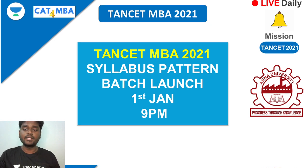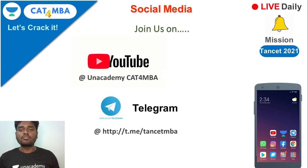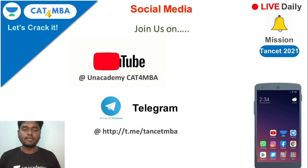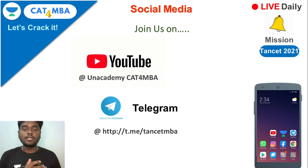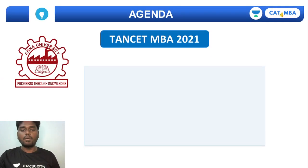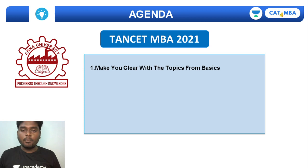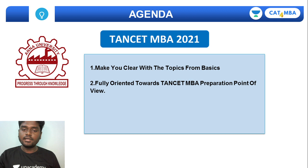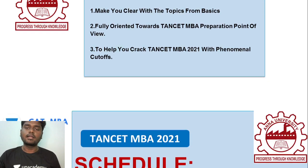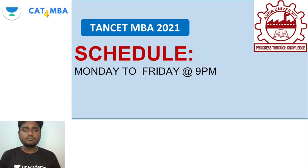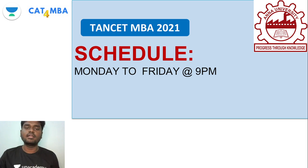Before going into the syllabus, don't forget to follow us on social media — on YouTube at cat4mba academy — and our Telegram channel, which is exclusively for sharing materials related to Tancet MBA 2021. The agenda is to make you clear on all topics from the basics, fully oriented towards Tancet MBA. The schedule runs Monday to Friday every day at 9 PM, starting 1st of January.